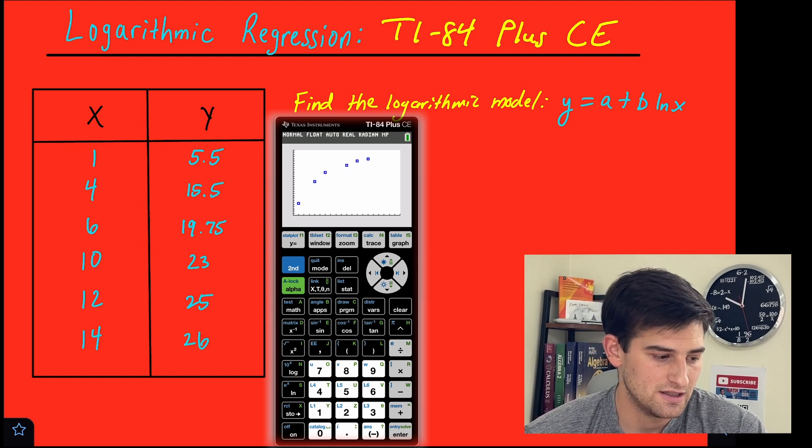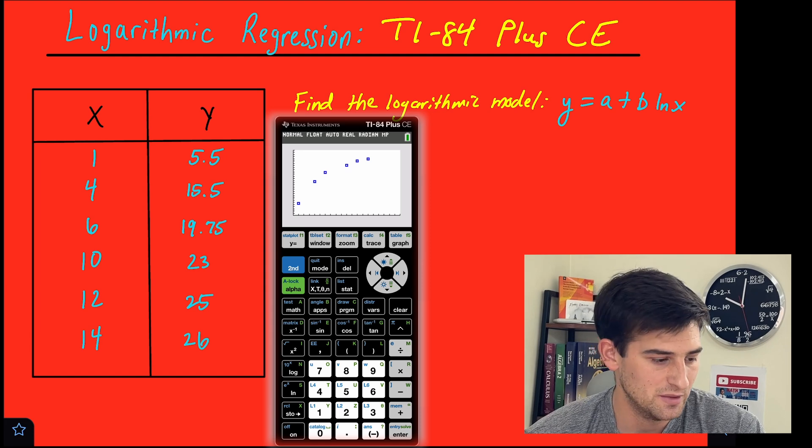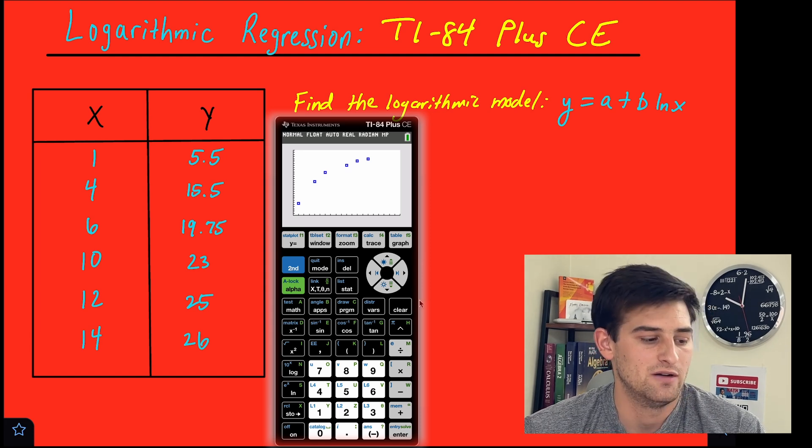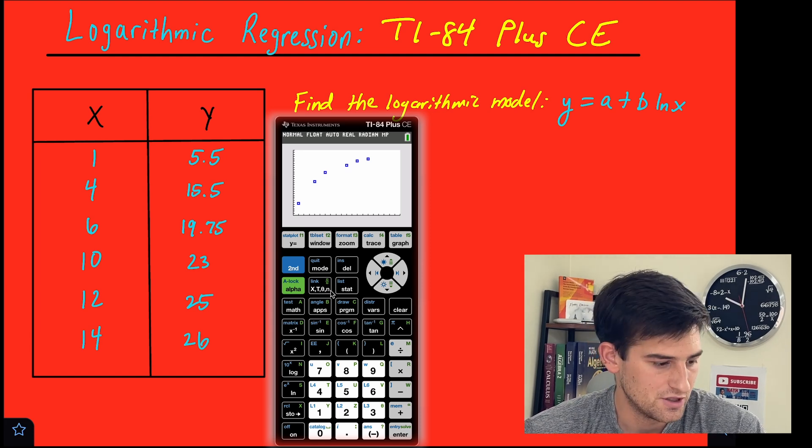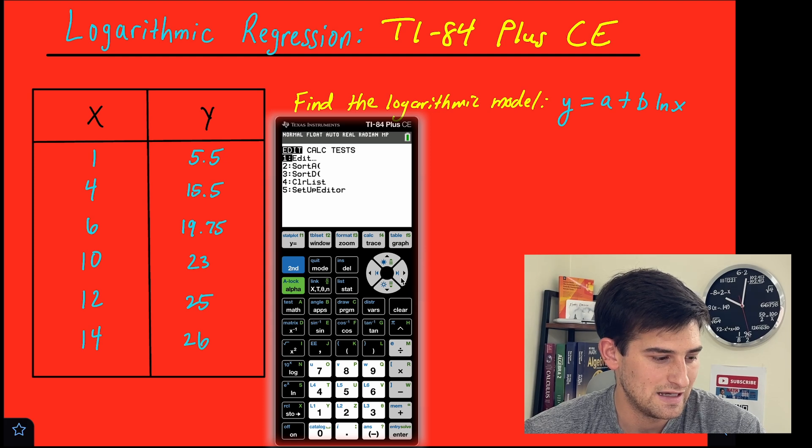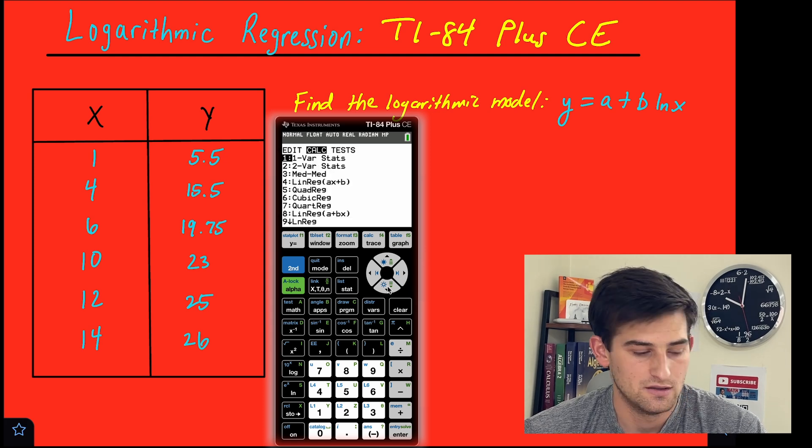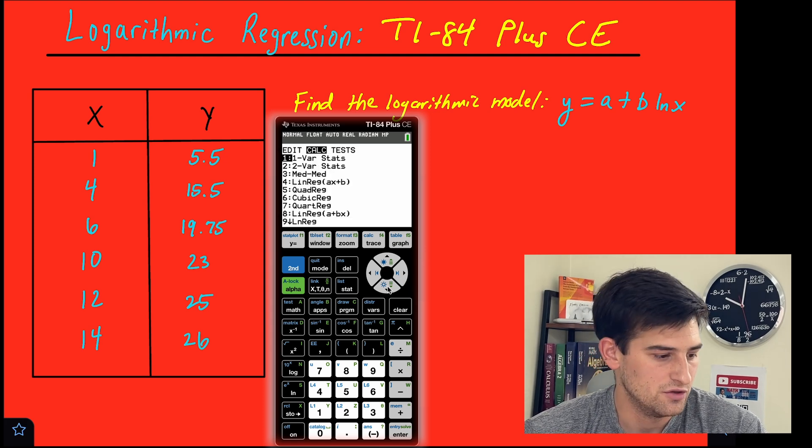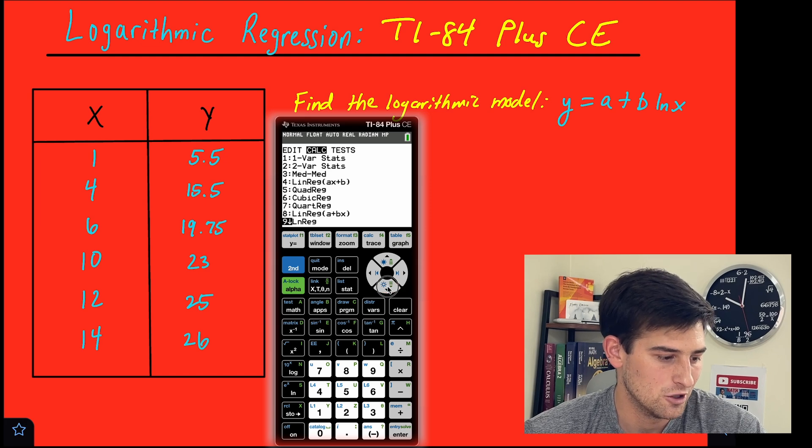Now, it looks like the inverse of an exponential function. So we see that it's a logarithmic. And so now we want to figure out our model. So let's go into stat, and now we go over here to calculate. And we want logarithmic regression, but if you'll notice, we don't see log REG, right?